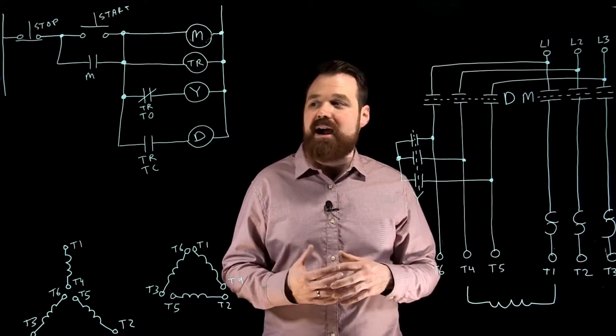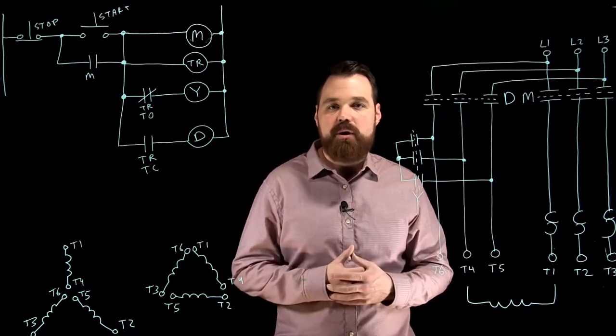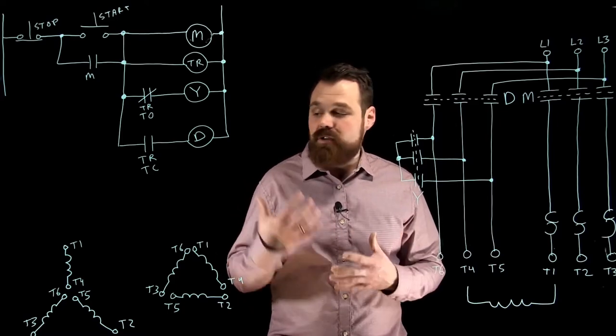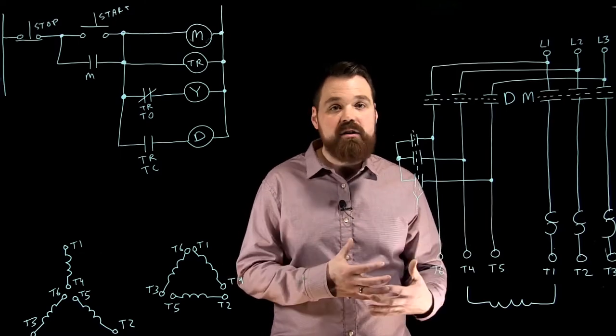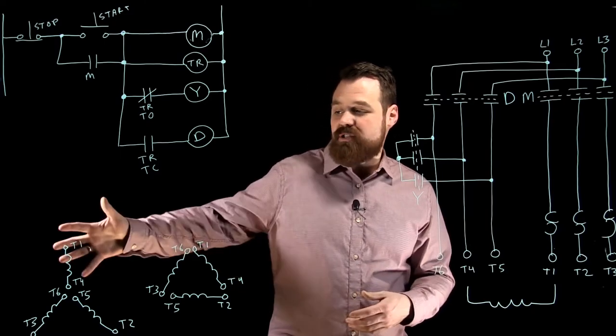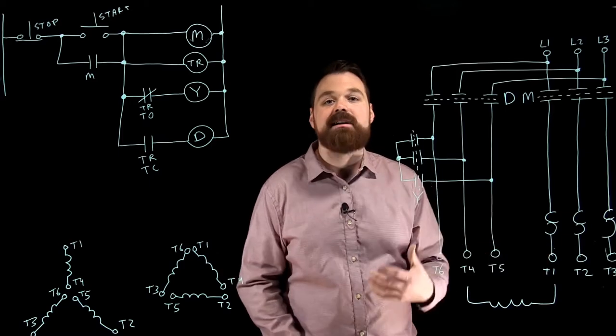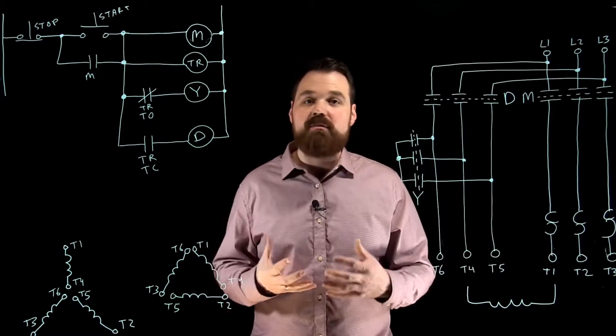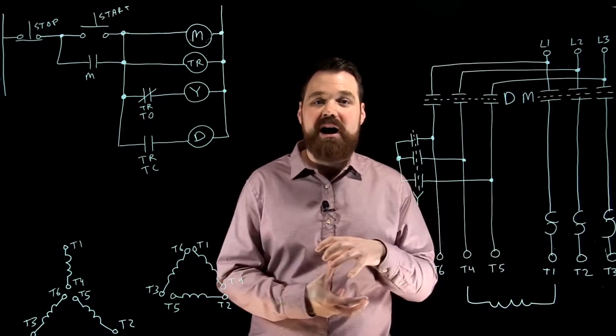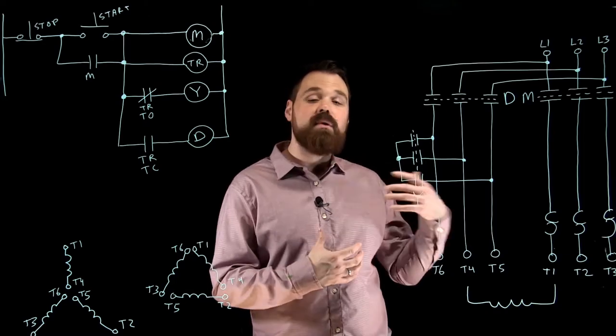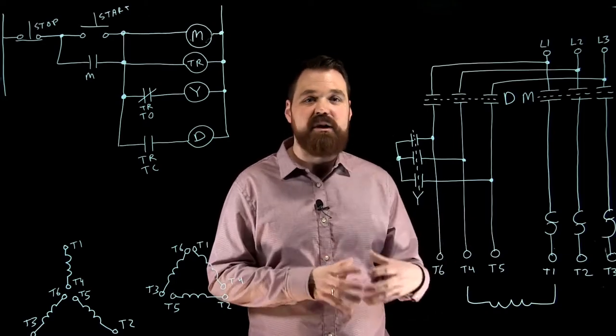The type I want to talk about right now is called a Y-delta starter. Basically with this, what we do is we take a six-lead single voltage motor, so it'll have T1 through T6 on it. What we're going to do is when we start the motor, we configure those windings in a Y formation, and then in order to run the motor, we switch them over into a delta formation.